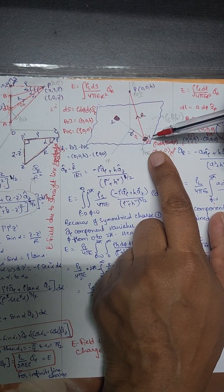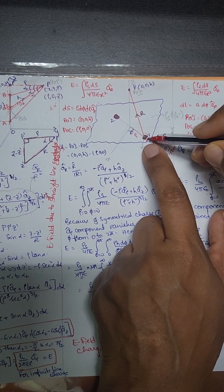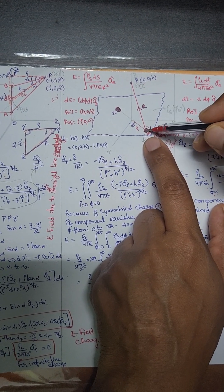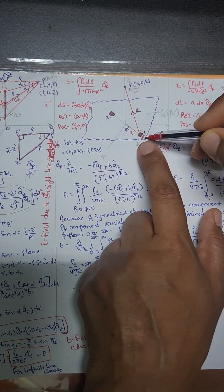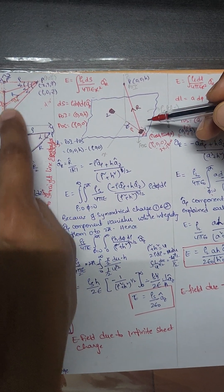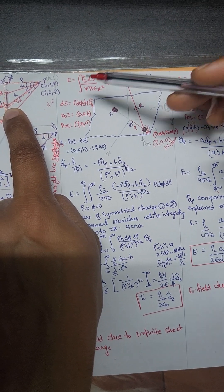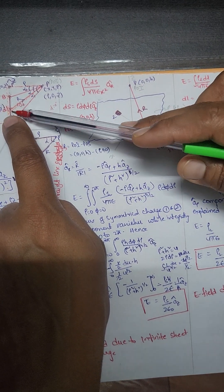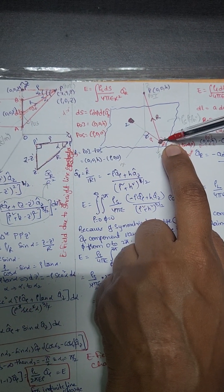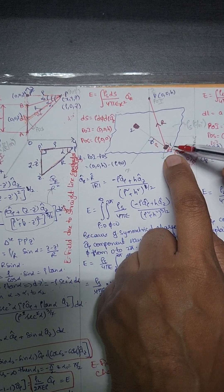Here, ds is nothing but your point of source. Your point of source is in the form of a surface — here the source is a sheet. Hence your source is taken in the form of ds. In the same way, we took the source as dl when the source is in the form of a line, so the small differential element of the source is dl. Here the small differential source will be ds.